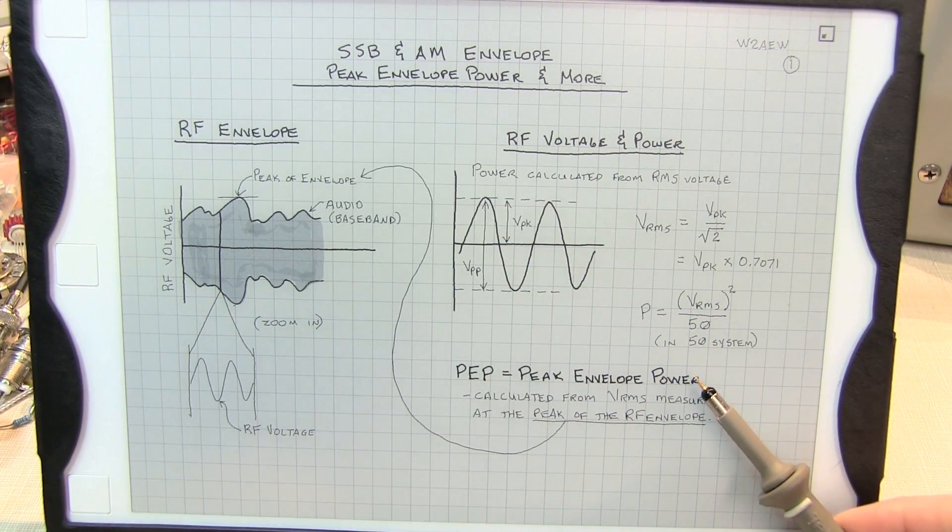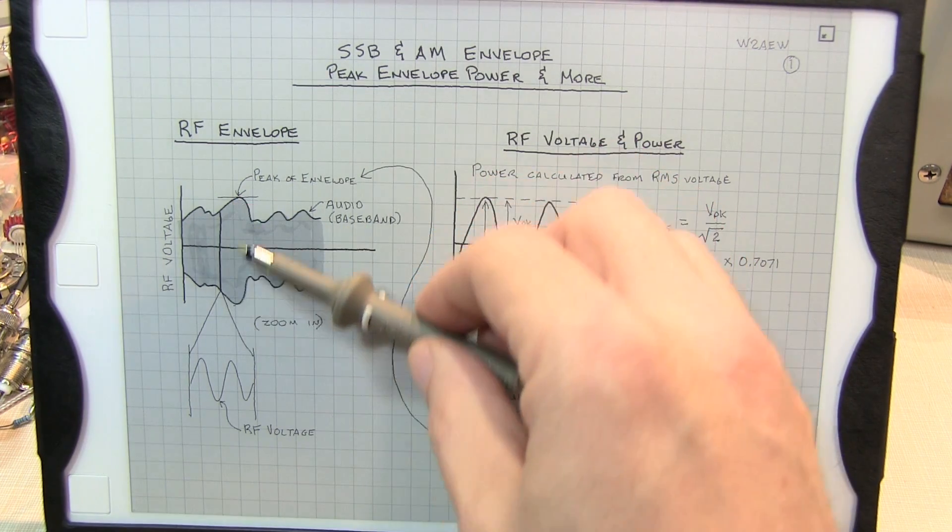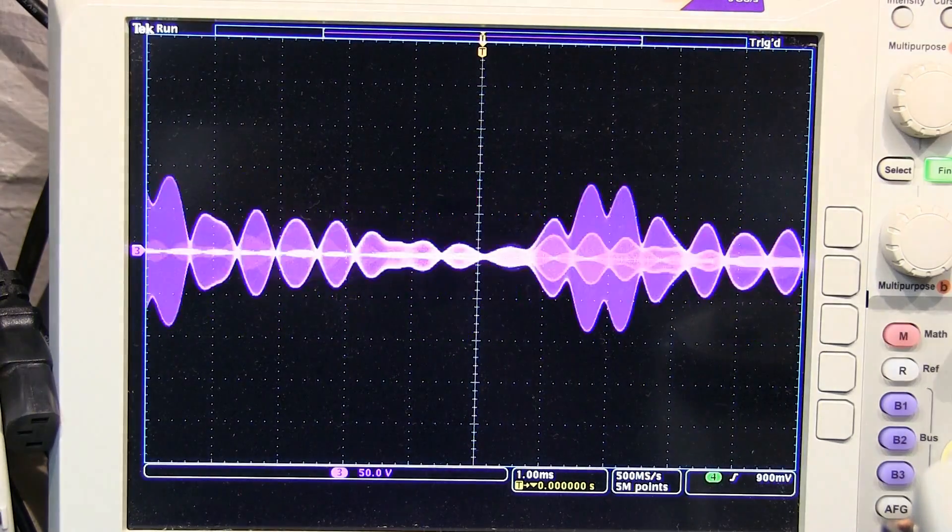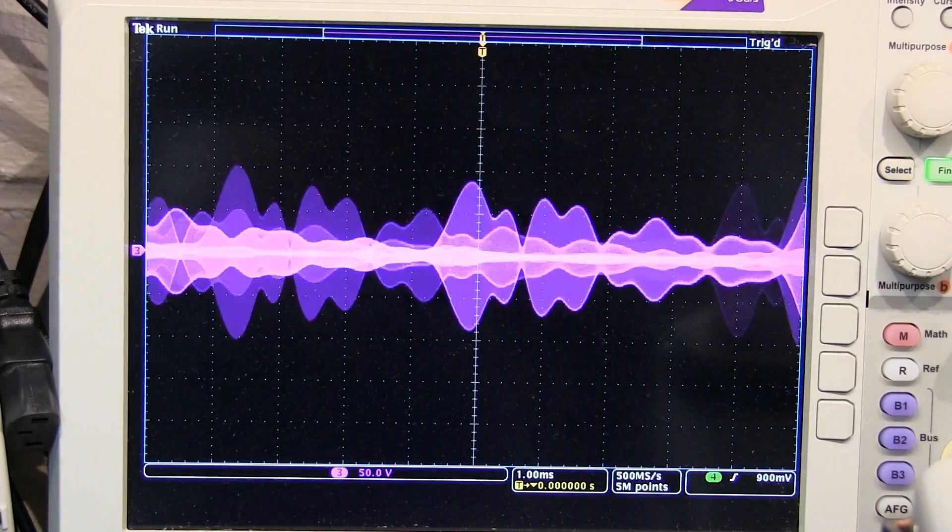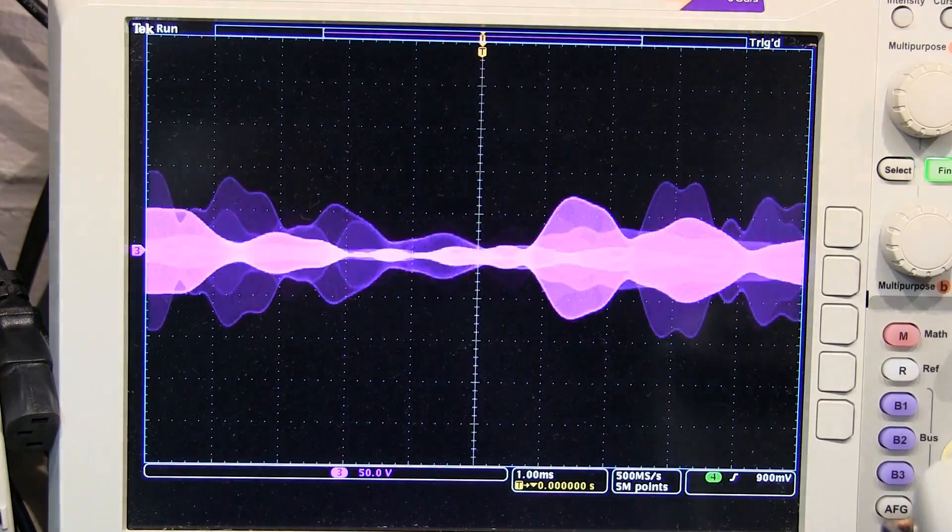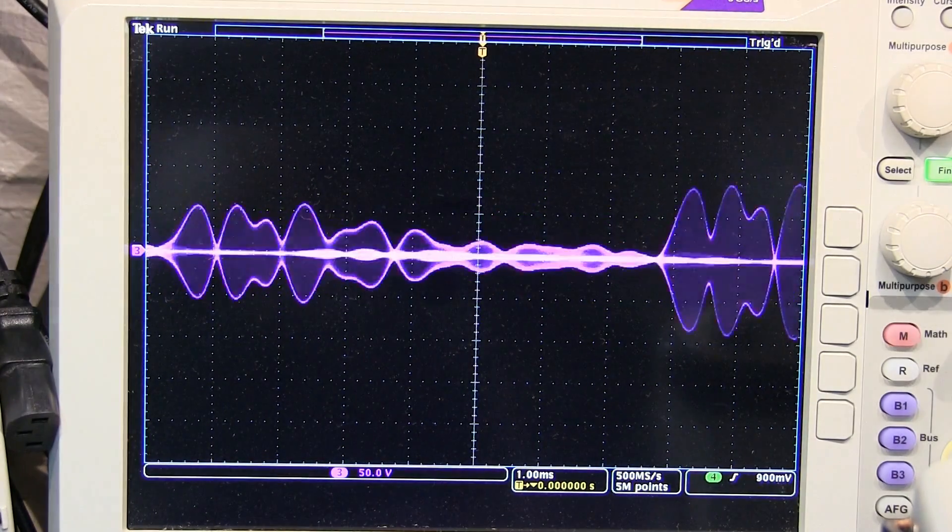So the peak envelope power is computed from the peak voltage converted to RMS at the peak of the excursion of the RF signal. In the case of this single sideband RF envelope, we can see that the peak excursion is really not going past about four divisions on the scope.